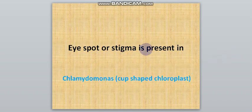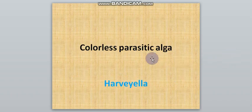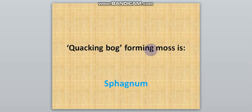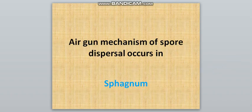Eye spot or stigma is present in Chlamydomonas. Chlamydomonas has a cup-shaped chloroplast. Colorless parasitic alga is Harveyella. Largest thaloid bryophyte is Marchantia. Cushion bulb-forming moss is Sphagnum. Air gun mechanism of spore dispersal occurs in Sphagnum.